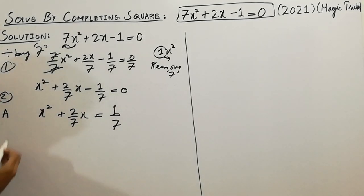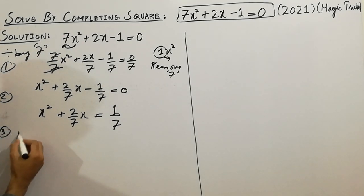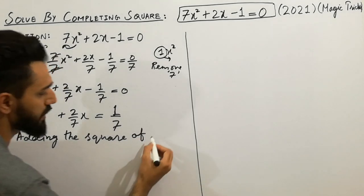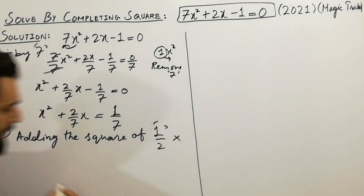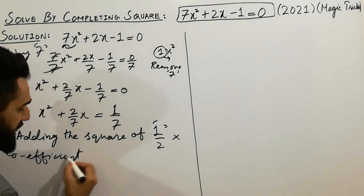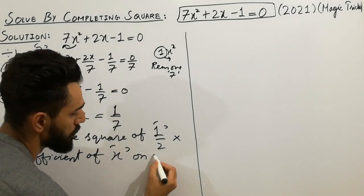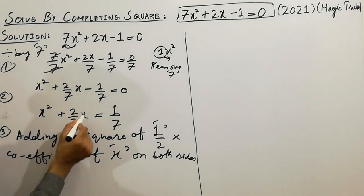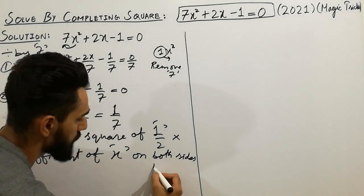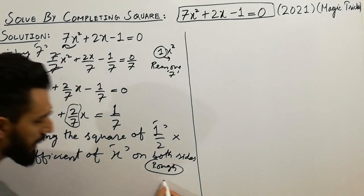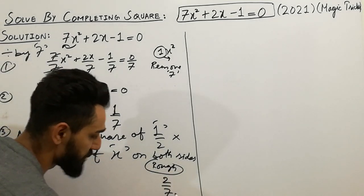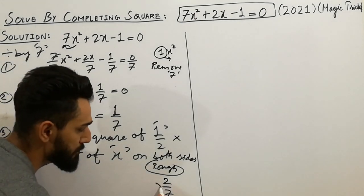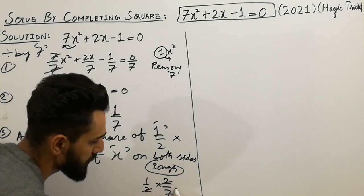Now moving to the third step. The third step is: adding the square of one-half multiplied by the coefficient of x, on both sides. So take the coefficient of x, which is 2 over 7, then multiply by 1 over 2. Simplifying 2 over 7 multiplied by 1 over 2, you will get the value of 1 over 7.